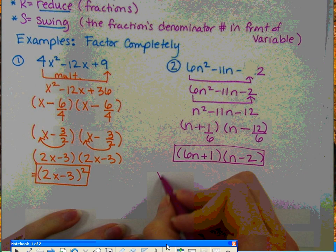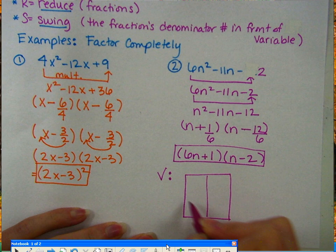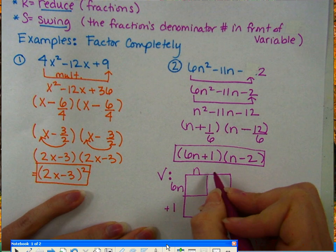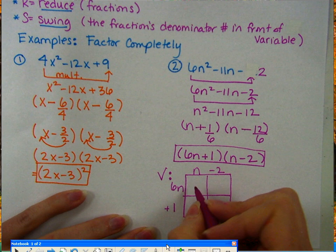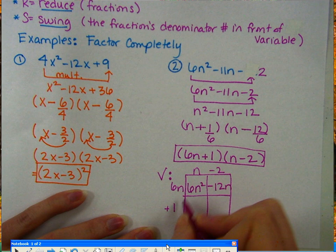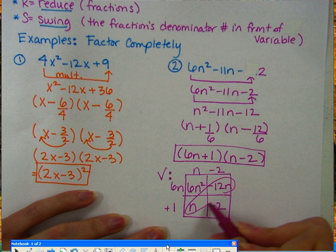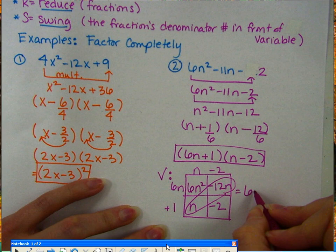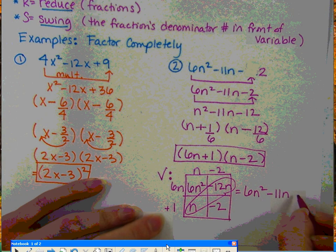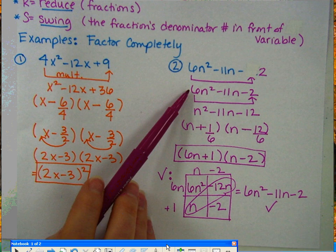So we can also check your answer by doing our box or FOIL method. So we have 6n and 1. So this is positive 1. And n negative 2. So 6n times n gives you 6n². 6n times negative 2 is negative 12n. This would give you n. And 1 times negative 2 is negative 2. So now when you combine your like terms, you have 6n² negative 12n and 1n gives you minus 11n and minus 2. And this checks out because that's what we originally started with right up here after I changed it.